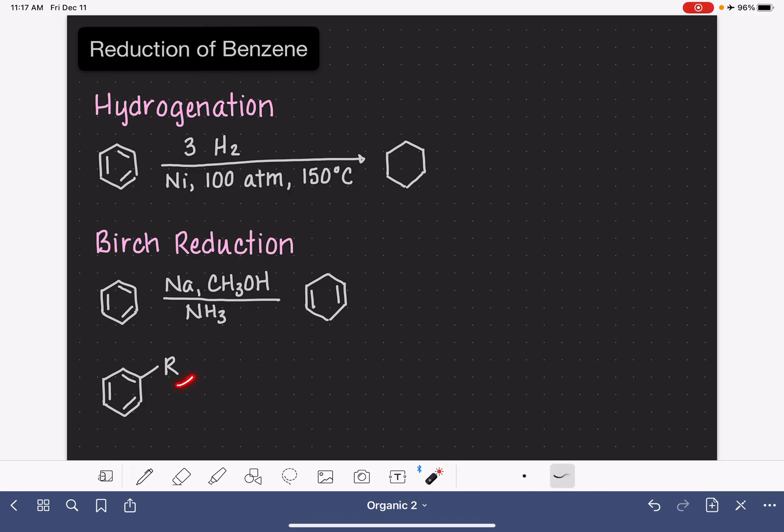It is important to note if there is an alkyl group present on the benzene ring prior to the Birch reduction reaction, like we're showing on this next example, that alkyl group is going to end up being attached to one of the carbon atoms in the double bond right there, like that.